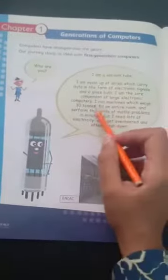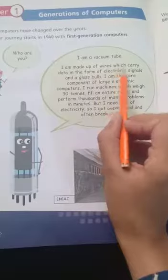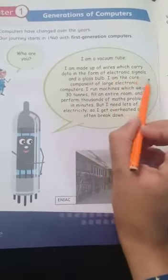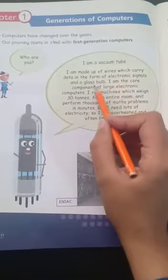Ways is asking. This device you see here is a vacuum tube. I am vacuum tube. I am made up of wires which carry data in the form of electronic signals and glass bulbs. This is a vacuum tube which carries data in the form of signals.